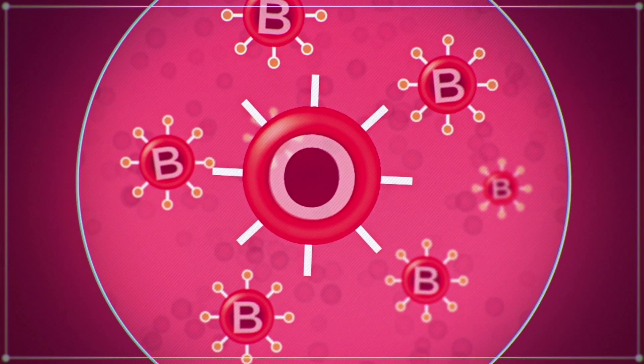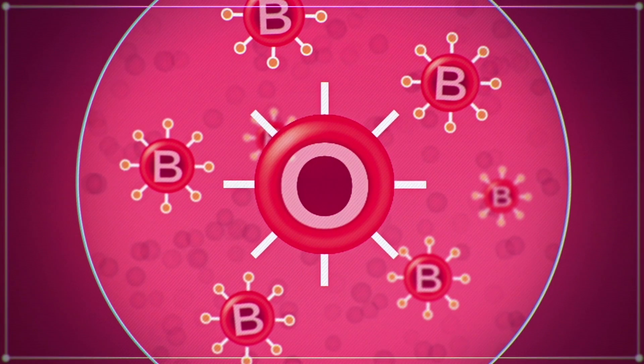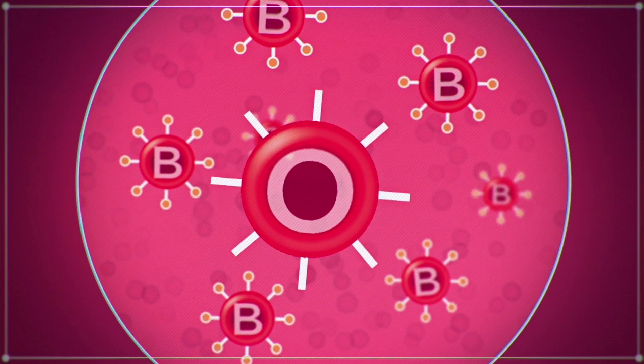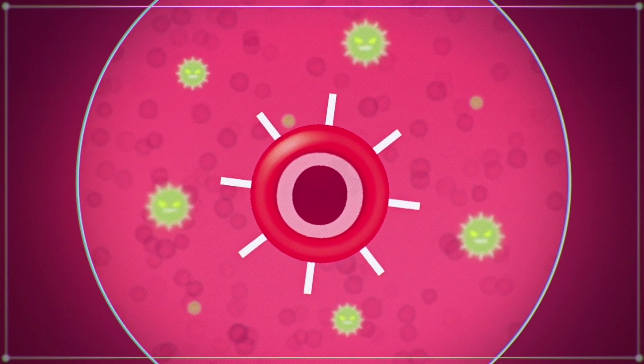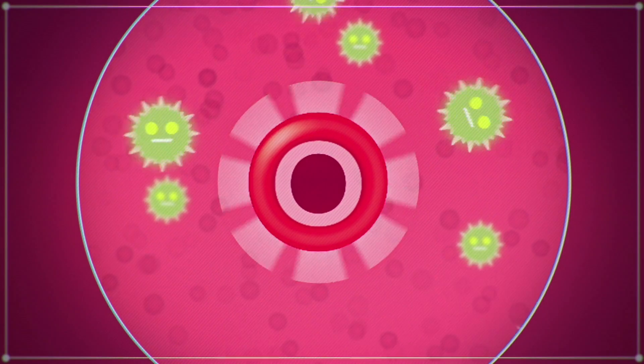People with blood group O are known as universal donors, as their blood can be given to anyone. Research shows that type O blood is also more resistant to severe malaria.